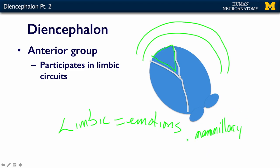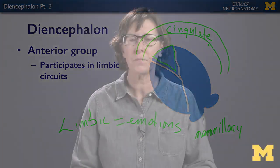So the circuit runs: hypothalamus mammillary nucleus → anterior nucleus of the dorsal thalamus → the cortex (the cingulate gyrus) — all part of the circuitry that regulates your emotions. In the next segment, we'll start to talk about the hypothalamus and all of the amazing things that it does.